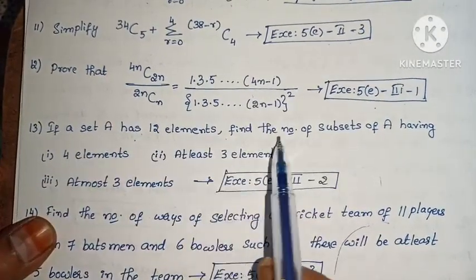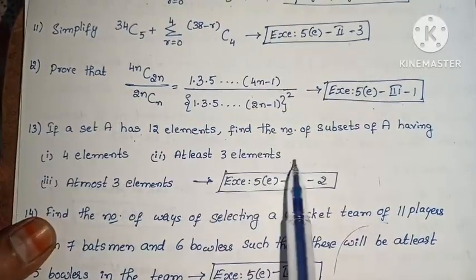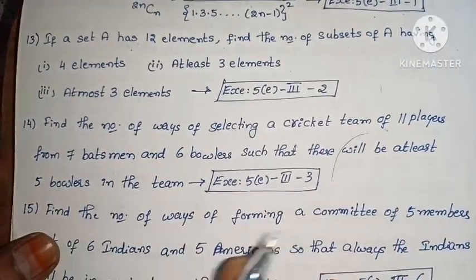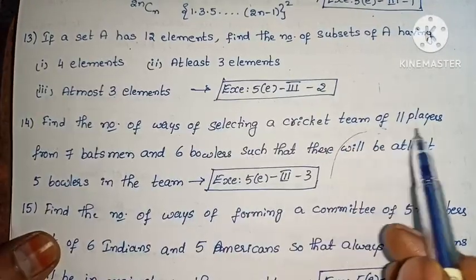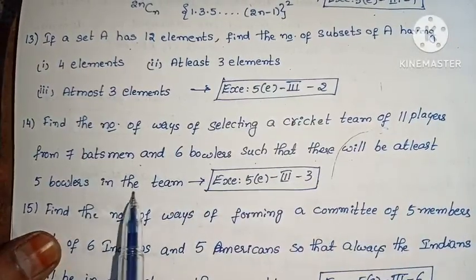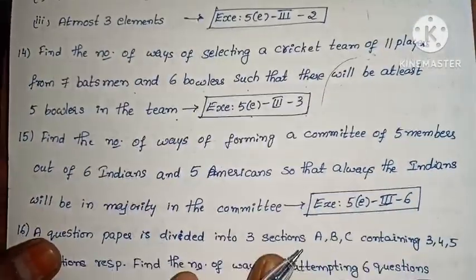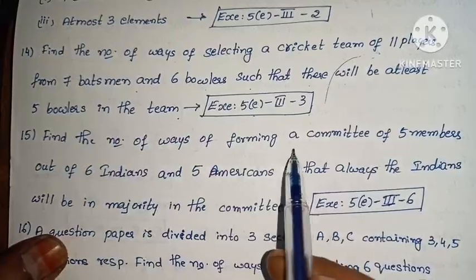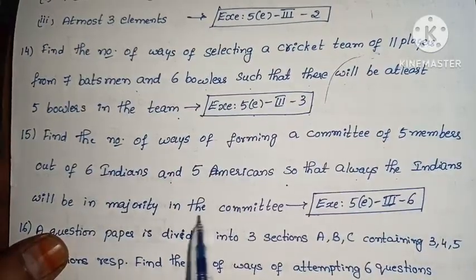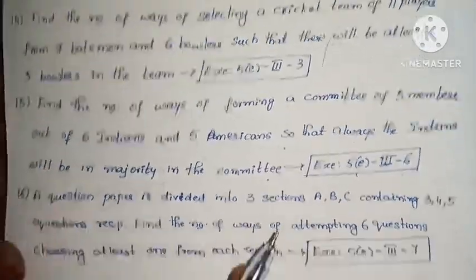Next: if a set A has 12 elements, find the number of subsets of A having (1) exactly 4 elements, (2) at least 3 elements, (3) at most 3 elements (Exercise 5, Roman III, second one). Next: selecting a cricket team of 11 players from 7 batsmen and 6 bowlers such that there will be at least 5 bowlers in the team (Exercise 5, Roman III, third one). This question also repeats in C4 question papers. Next: forming a committee of 5 members out of 6 Indians and 5 Americans so that Indians are always in the majority (Exercise 5, Roman III, sixth one).